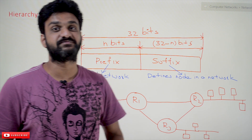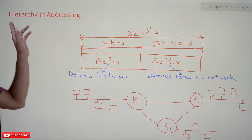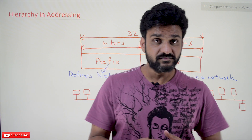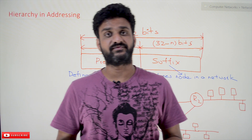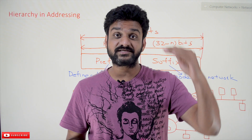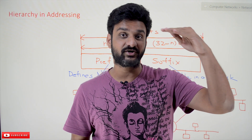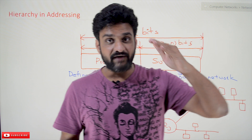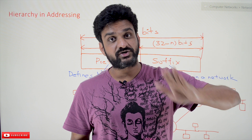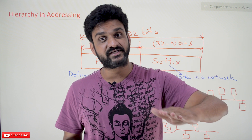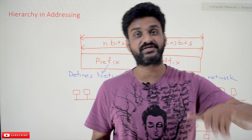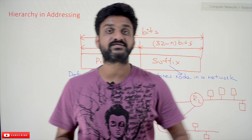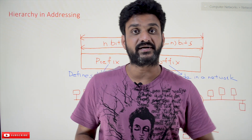In this class we'll try to understand hierarchy in addressing. If you take any addressing mechanism — for example, a postal address — it will have a hierarchy. First there is the door number or apartment number, then the street name, then the locality name, then the city, then the district, then the country, and then the pin code. This is the hierarchy in which postal addresses are organized.